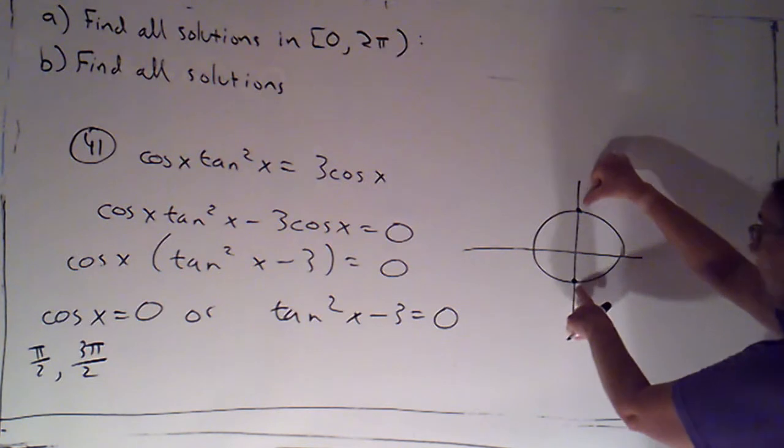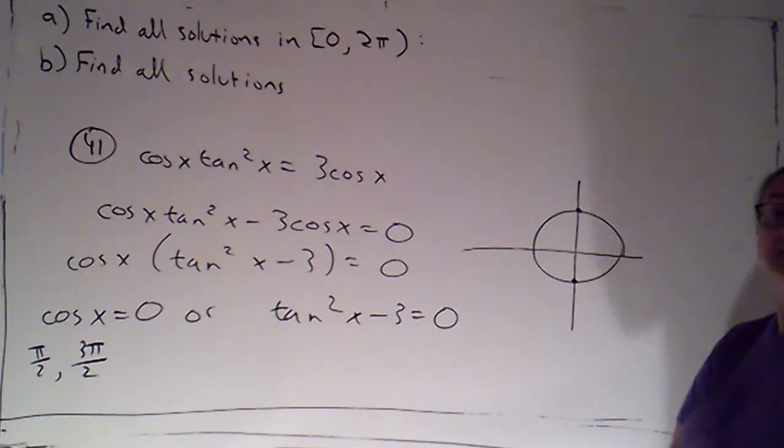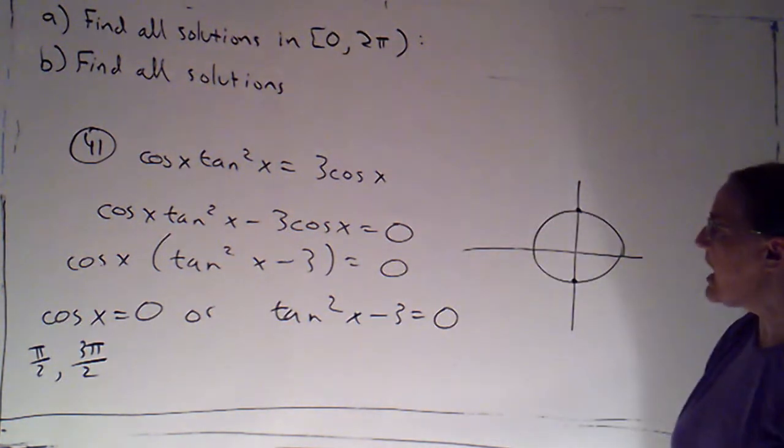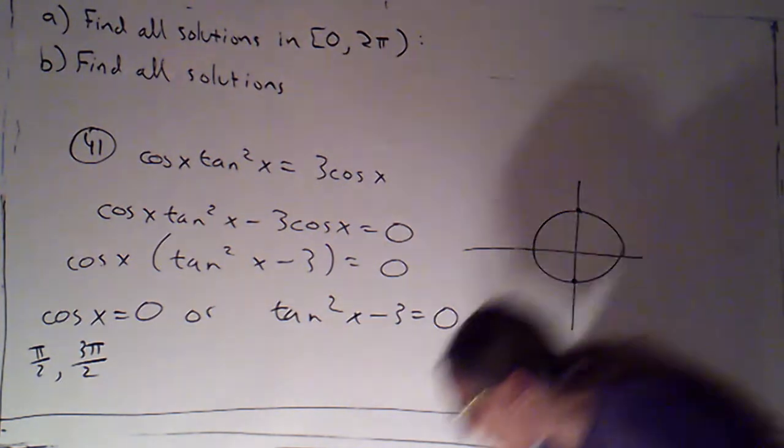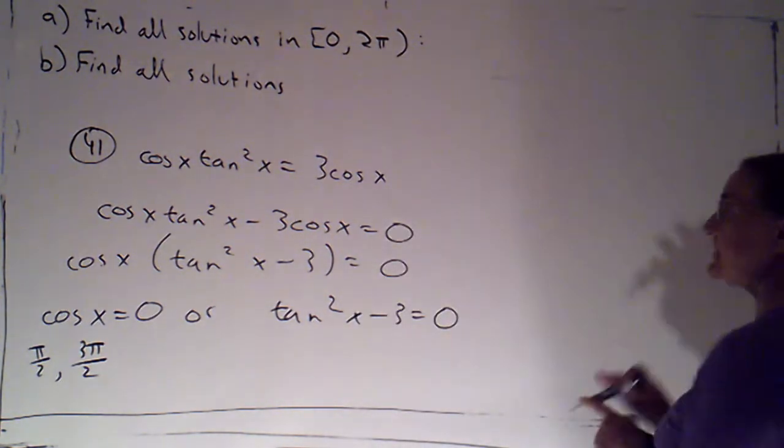And you'll notice these are pi apart. So if I want to, I should be able to consolidate those when I'm finding all solutions. All right. With this next one, tangent squared minus 3 equals zero.